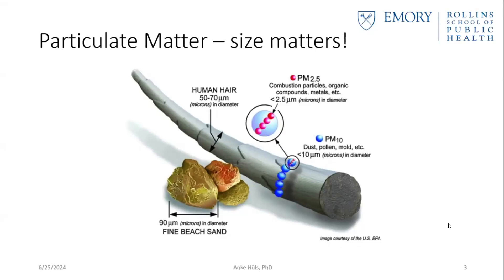Due to their really small size, PM2.5 particles are particularly dangerous because they can get deep into our body and cause severe health effects. For example, PM2.5 particles are so small that when you breathe them in, they get into your respiratory system, through the alveoli, and from there can enter your bloodstream. Once in the bloodstream, they can cause systemic inflammation, which has also been linked to neuroinflammation.